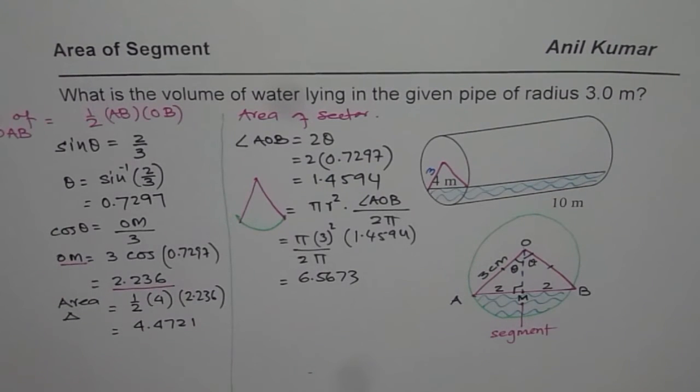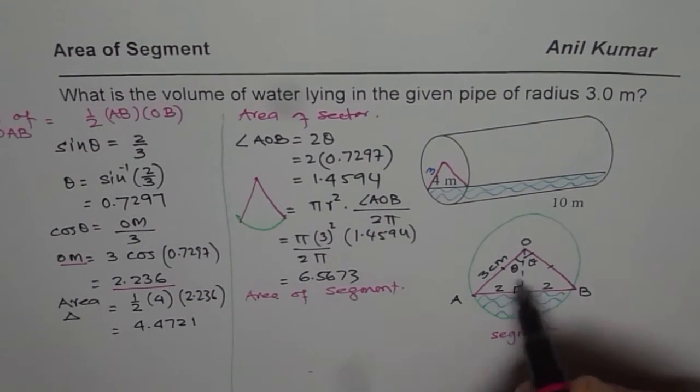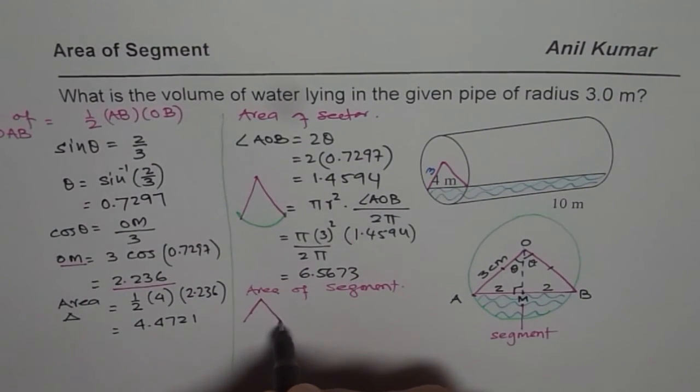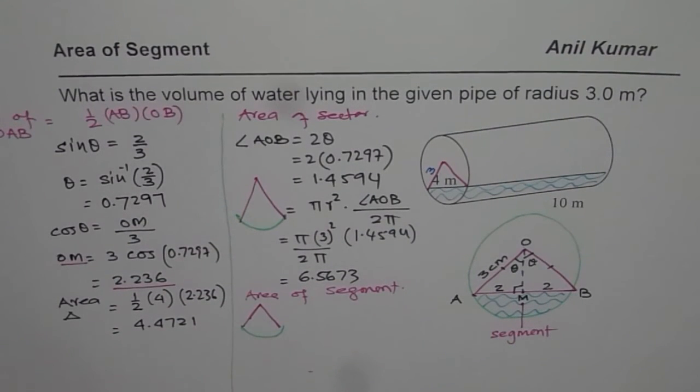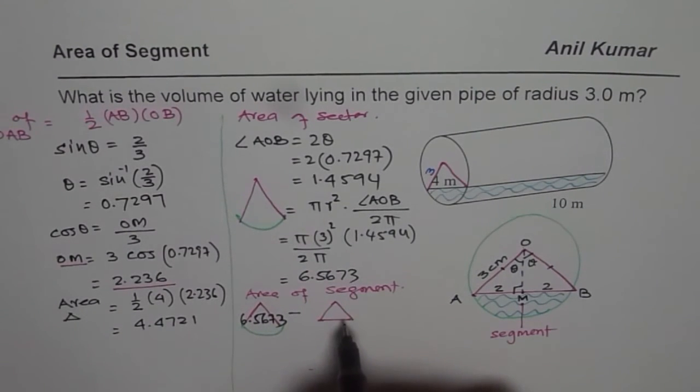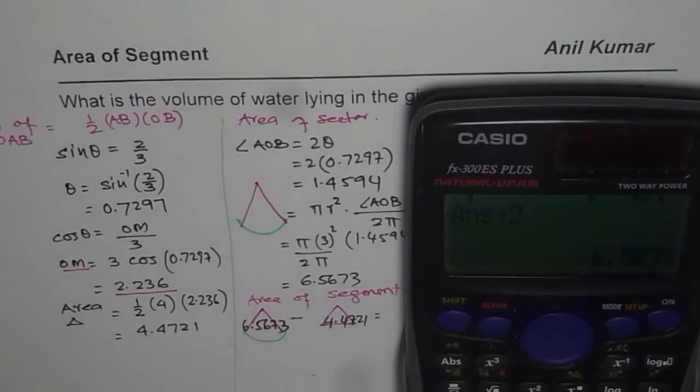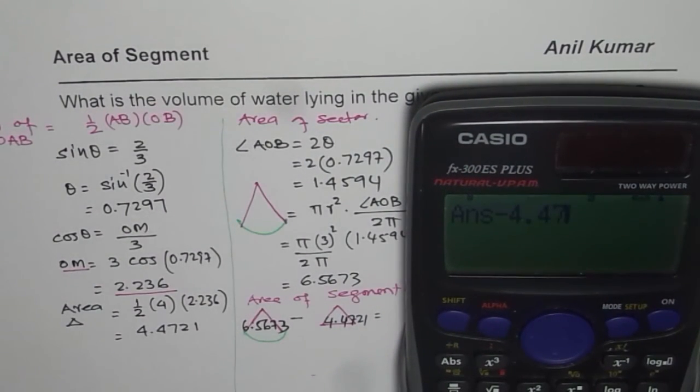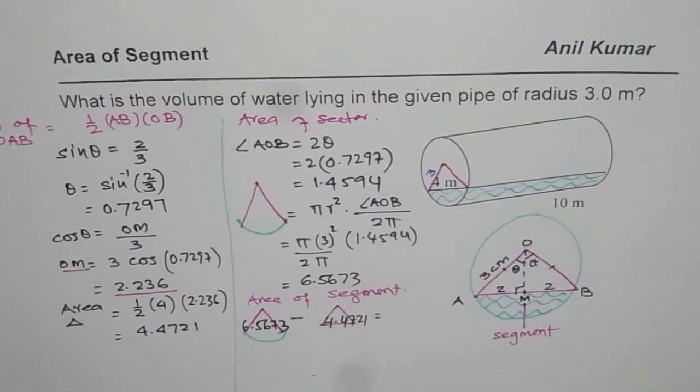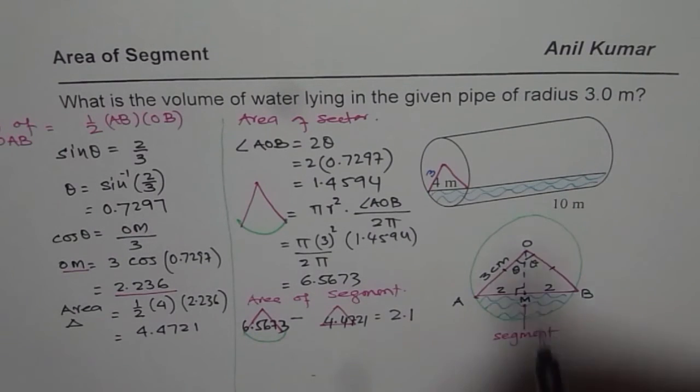So now let's find area of segment. Area of segment which would be area of sector, and take away the triangle itself to get the answer. So we'll take away this from this. So we are taking away from 6.5673 the value of the triangle area which is 4.4721, and that is equal to, minus 4.4721 equals to in decimals 2.09, so let's say 2.1. So we get area of the segment as 2.1.